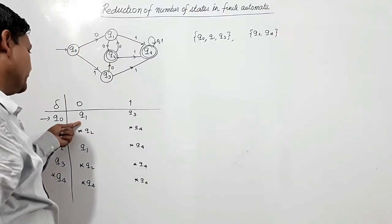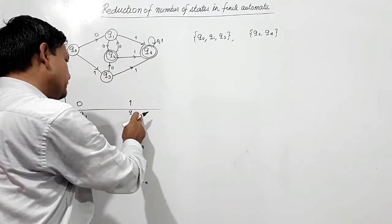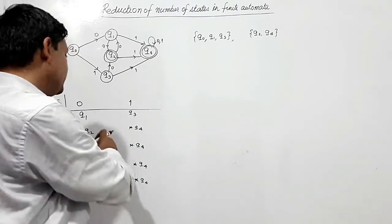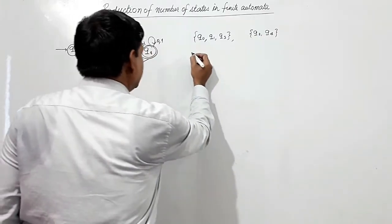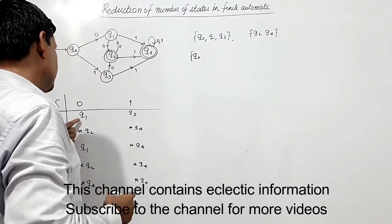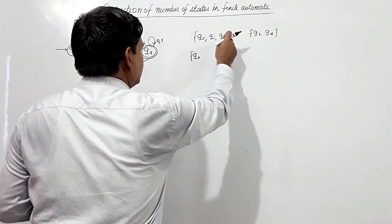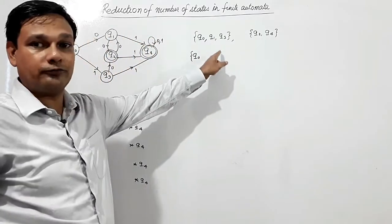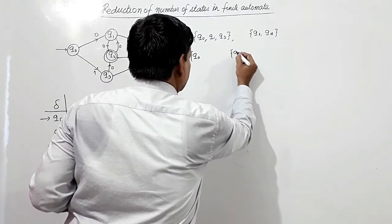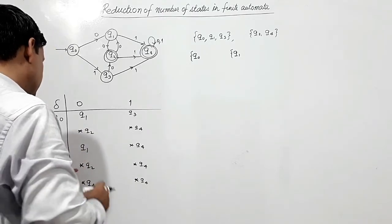Q0 on 0 is in Q1 which is in the non-final set, and Q0 on 1 is in Q3 which is also in the non-final set. But Q1 on 0 is going to Q2 and Q4, which are in the final set. So Q0 should be in a different set because Q1 is going into the set of final states. Therefore, Q1 will be segregated from Q0.